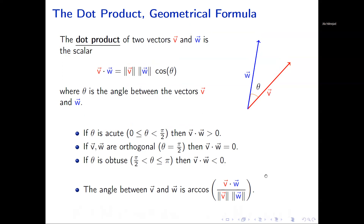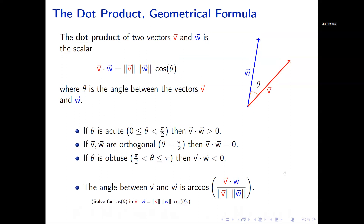The angle between v and w can be found by solving for cosine theta in the formula. We can write cosine theta equals v dot w divided by the magnitude of v times the magnitude of w, then take the arccosine of both sides to solve for theta. So the angle between them is arccos of that expression.